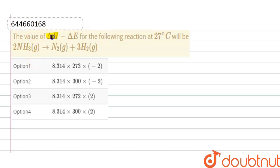The value of ΔH (enthalpy change) minus ΔE (internal energy change) for the following reaction at 27°C will be... So here we have to find out the difference of ΔH minus ΔE.